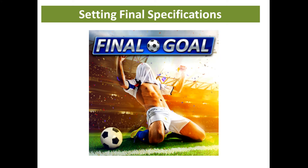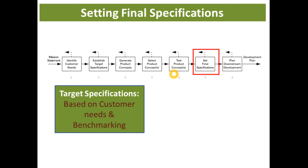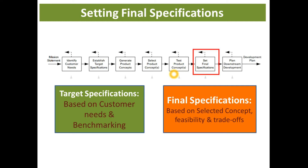Hello students, welcome to the class on product design. In the previous video we discussed how to make the target specification. In this video we are going to discuss setting final specifications. The specification comes in two stages: establishing target specification after identifying customer needs, and setting final specification after testing the product concept. Target specification is based on customer needs and benchmarking, whereas final specification is based on the selected concept, feasibility, and trade-offs.